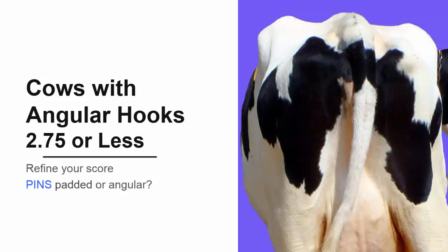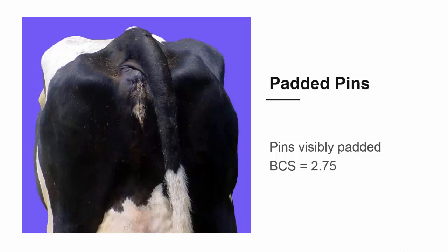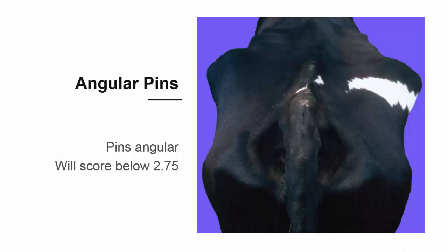Now, we'll refine that score by evaluating the pins. Are they padded or angular? If you can look at the pins and see that they have visible padding, the cow will get a body condition score of 2.75. If you don't see fat on the pins, the cow will score below 2.75.